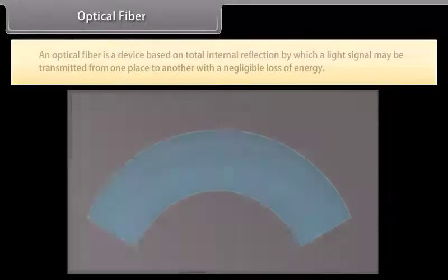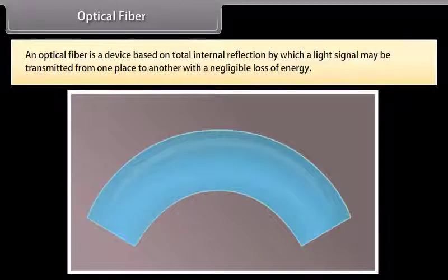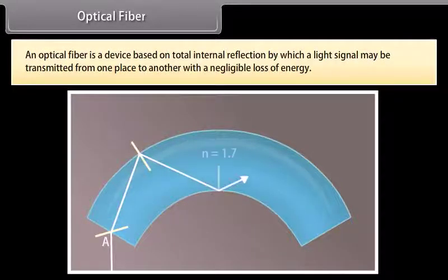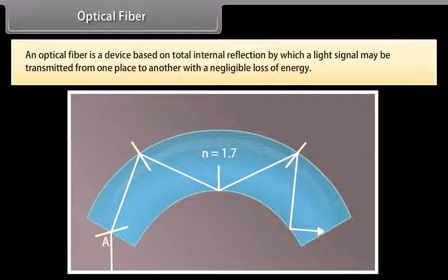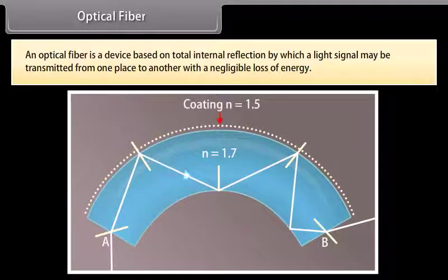Optical fiber: An optical fiber is a device based on total internal reflection by which a light signal may be transmitted from one place to another with negligible loss of energy.